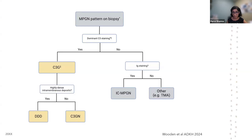If you don't have dominant C3 staining and if you have immunoglobulin staining, it's classified as immune complex MPGN, and none is TMA. Overall, the MPGN pattern of injury has also undergone a change in the last few years — we used to do electron microscopic classification, but now we're doing IF classification of MPGN.